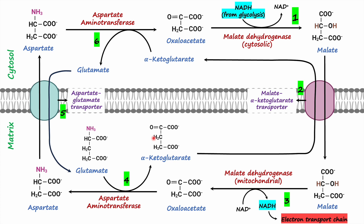So this is the overview of the malate-aspartate shuttle. Briefly: oxaloacetate in the cytosol acquires electrons from NADH and is reduced into malate by malate dehydrogenase, oxidizing NADH to NAD+ which enters glycolysis. Malate then enters the mitochondria, where it is converted back into oxaloacetate by mitochondrial malate dehydrogenase, passing electrons to NAD+ to regenerate NADH for the electron transport chain. Oxaloacetate in the mitochondria cannot cross the membrane, so it is transaminated to aspartate by aspartate aminotransferase, with the amino group donated by glutamate, which is thereby converted into alpha-ketoglutarate.